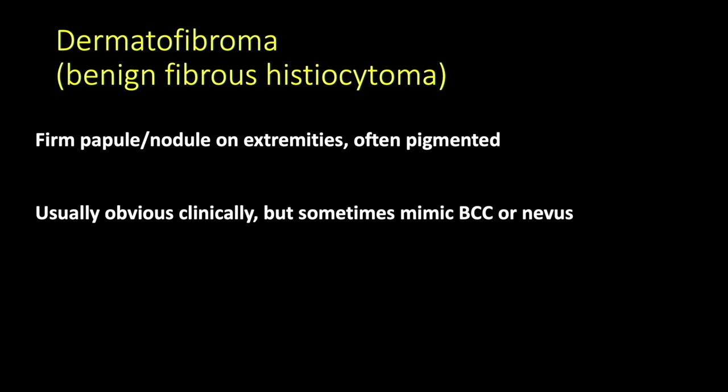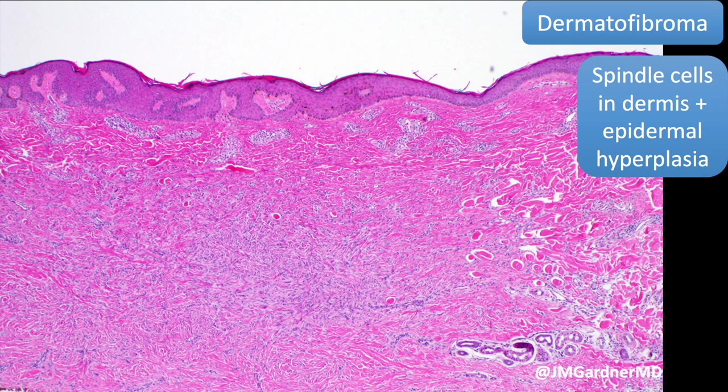Benign fibrous histiocytoma is the soft tissue pathology name often given to dermatofibroma. These are papules that are usually firm, often on the extremities, maybe the trunk, occasionally the head and neck. They tend to be pigmented and usually clinically obvious to the dermatologist, but sometimes they mimic basal cell carcinoma, seborrheic keratosis, or nevus.